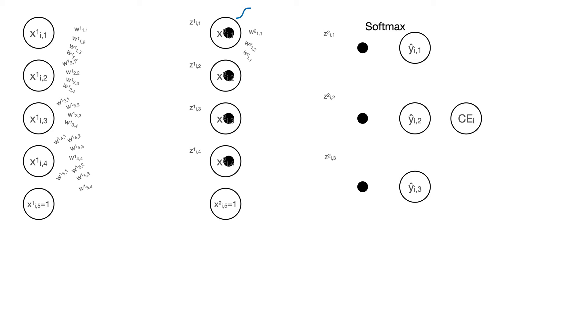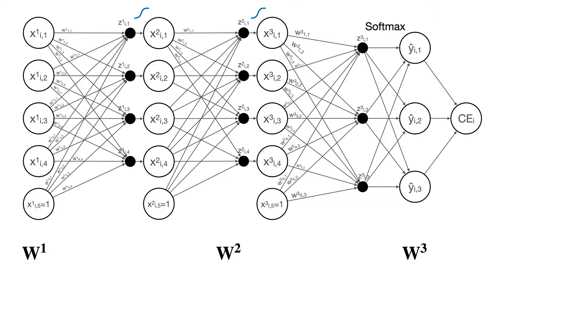Well, we'd have three weight matrices, W1, W2, and W3, that we'd want to optimize, which means we'd need to solve for the gradient of cross entropy with respect to W1, W2, and W3.